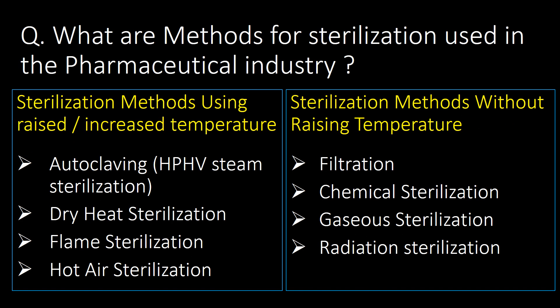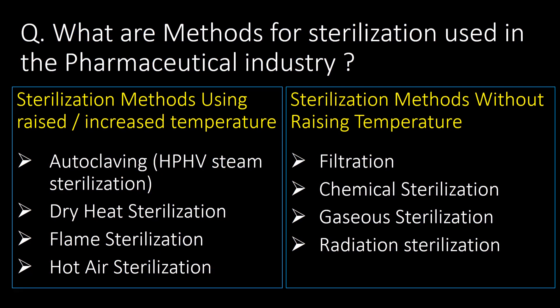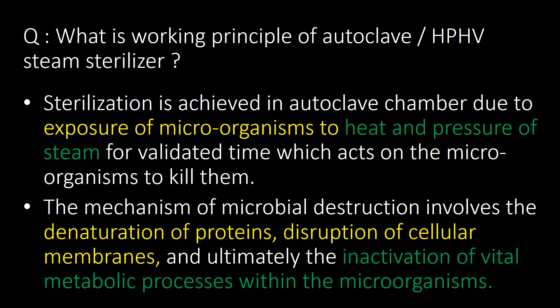Welcome. First question: what are the methods of sterilization used in the pharmaceutical industry? For easy understanding, we will divide them into two categories. First, sterilization methods using raised temperature, which include autoclaving (HPHV steam sterilization), dry heat sterilization, flame sterilization, and hot air sterilization. Second, sterilization methods without raising temperature, which include filtration, chemical sterilization, gaseous sterilization, and radiation sterilization.